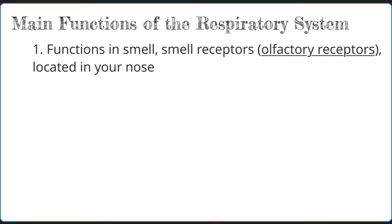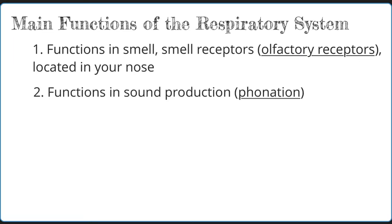Now that you have an understanding of the respiratory system and its different divisions, let's take a look at the main functions of the respiratory system. First of all, it allows you to smell through the use of smell receptors, which are located in your nose. It also allows you to produce sounds, also known as phonation — simply said, it allows you to speak. This occurs with air coming up from your lungs, through your trachea and voice box, in order to produce that sound.